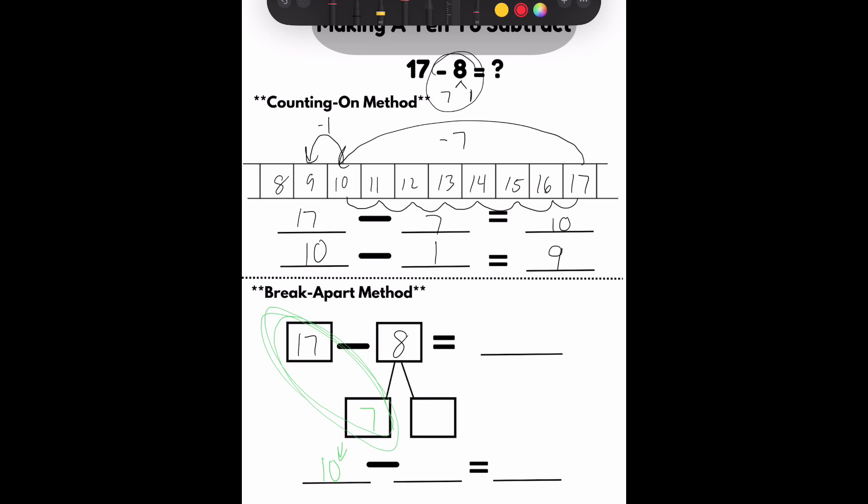Then, I look at the number bond. I have 8 on top. That means I'm going to subtract the 7 from 8 to make 1. So, in this box, I'm left with 1, which that 1 comes straight down. 10 minus 1, we know, would make 9. Therefore, 17 minus 8 makes 9.